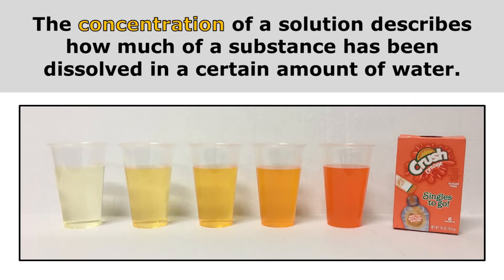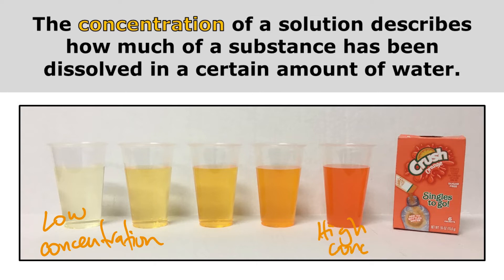The concentration of a solution describes how much of a substance has been dissolved in a certain amount of water. You can see here that I have five cups and they all have the same amount of water, but I've dissolved different amounts of my orange drink mix in each cup. On the far left, this has a very low concentration — it's barely orange at all — because only a little bit has been dissolved. On the other end, this has a much higher concentration because much more of the orange drink mix has been dissolved. That's what concentration tells us: how much stuff has been dissolved in a certain amount of water.